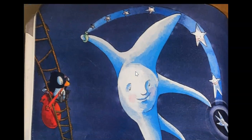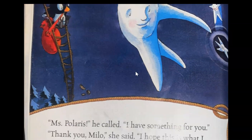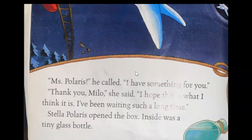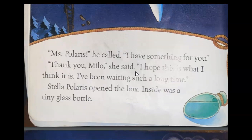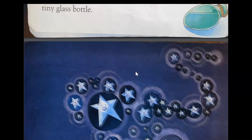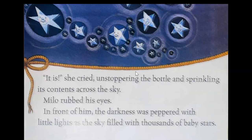It must be Stella Polaris. Miss Polaris, he called, I have something for you. Thank you Milo, she said. I hope this is what I think it is. I've been waiting such a long time. Stella Polaris opened the box. Inside was a tiny glass bottle. Look at all those stars! It is, she cried, unstoppering the bottle and sprinkling its contents across the sky. Milo rubbed his eyes. In front of him, the darkness was peppered with little lights as the sky filled with thousands of baby stars.